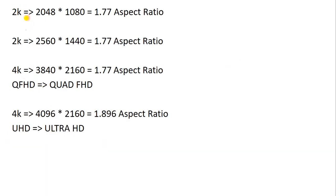After 1080p, we have 2K. You may have heard about 2K video or 2K TV at your friend's house. The first version of 2K has pixels of 2048×1080, and 2048 divided by 1080 gives an aspect ratio of 1.77.